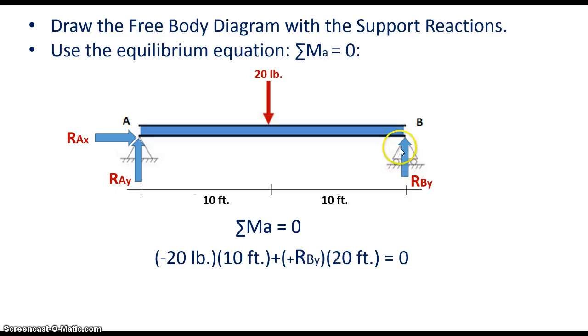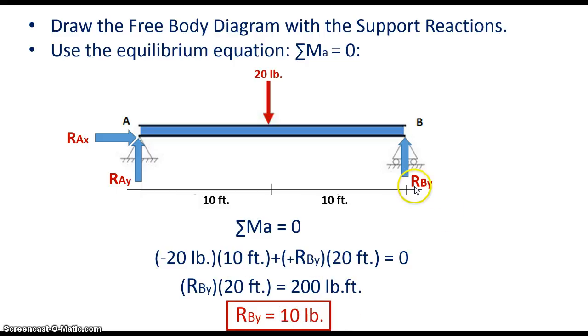So I'm going to put here positive, right, because it's acting up, so I'm going to put positive RBY acting up here, and I'm going to multiply it by its perpendicular distance from point A to the line of action of that force, which is 10 plus 10, which is 20 feet, right? So I'm going to multiply RBY by 20 feet, and then doing simple algebra, combining the terms, I'm going to get RBY times 20 feet is equal to 200 pound-foot. I took this and I combined them, and I brought it to the other side of the equation, and then I solved using simple algebra, divided by 20, and solved for RBY, and RBY winds up being 10 pounds.